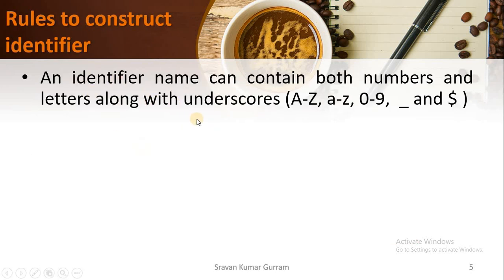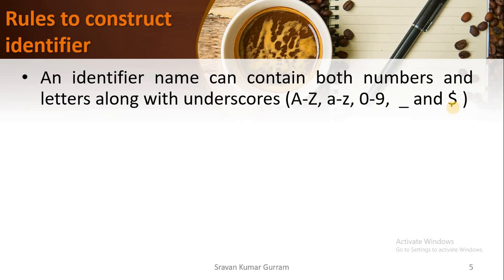To frame an identifier, we need to follow some rules. While framing the identifier, we can use any alphabet — that may be a lowercase or uppercase letter — and we can use digits from 0 to 9. Only two special symbols are allowed in Java: underscore and dollar symbol. Except for these, we should not use anything else while framing the identifier.